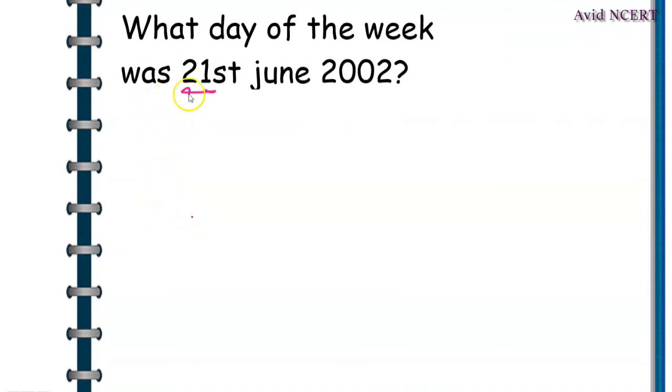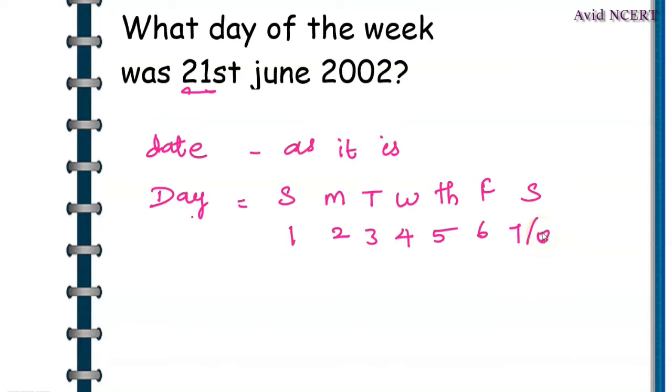The codes for date are as follows: Sunday, Monday, Tuesday, Wednesday, Thursday, Friday, Saturday. It starts from 1, 2, 3, 4, 5, 6, 7 slash 0. So if the remainder is 0 or 7, we have to check for the remainder to determine the day.